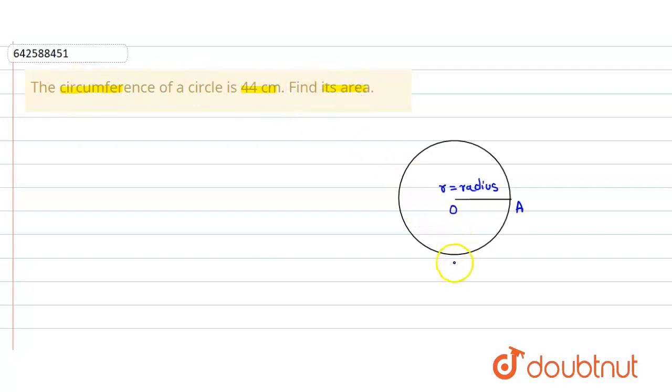So here this one is the circle and here r is the radius which is the length from o to a. So first we consider, let the radius of circle be r centimeter.